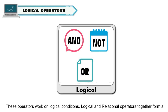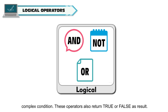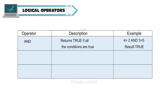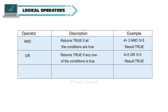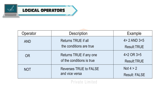Logical operators work on logical conditions. Logical and relational operators together form a complex condition. These operators also return true or false as a result. And returns true if all the conditions are true; for example, 4 > 2 And 3 < 5 — result is True. Or returns true if any one of the conditions is true; for example, 4 > 2 Or 3 > 5 — result is True. Not reverses true to false and vice versa; for example, Not (4 > 2) — result is False.